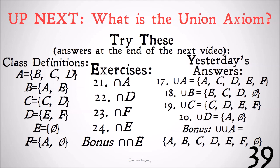For the union of B, we're taking all the members of A — that's B, C, D — and all the members of E, which is just the null set. So the union of B is just {B, C, D, ∅}.